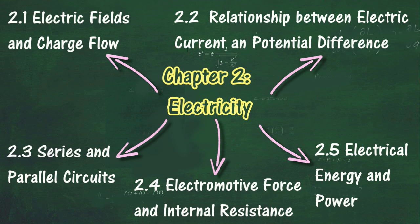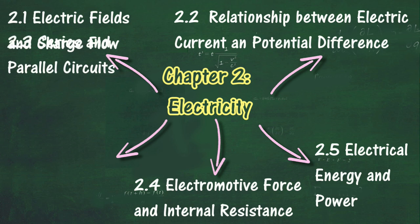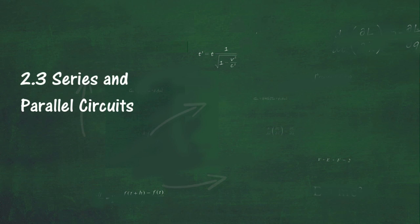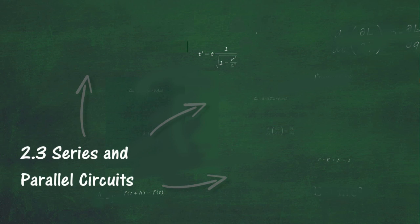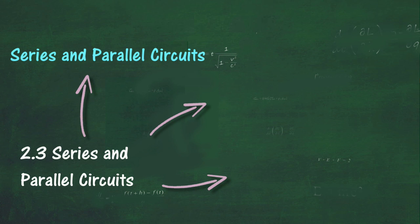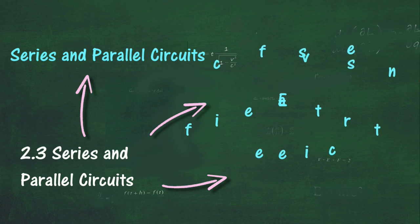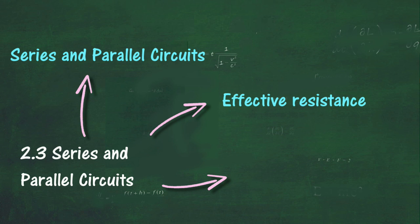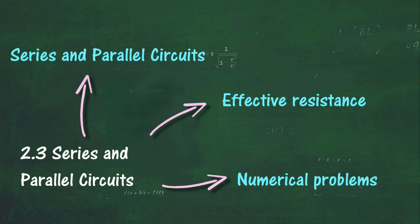In Section 2.3, we will learn about series and parallel circuits. At the end of this section, you should be able to identify series and parallel circuits, compare the current and potential difference of series and parallel circuits, determine the effective resistance of resistors connected in series and in parallel, and solve problems involving current, potential difference and resistance in series circuits, parallel circuits and their combinations.